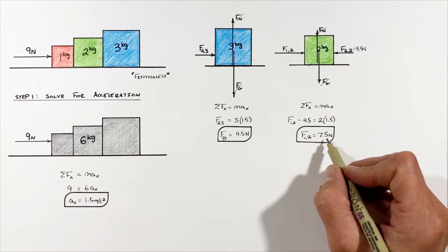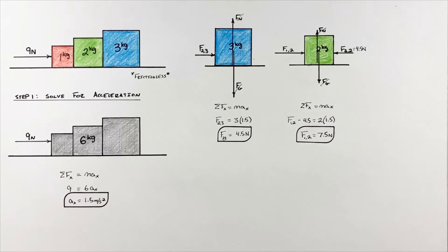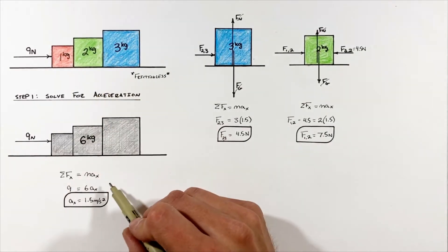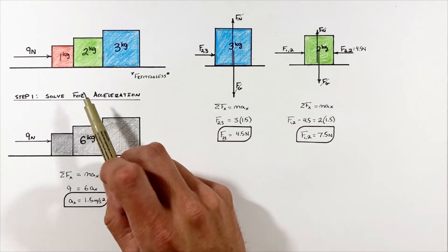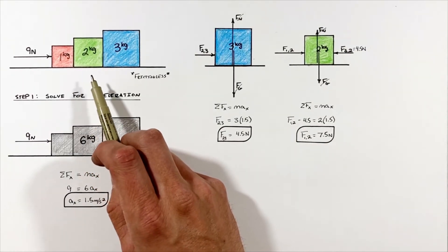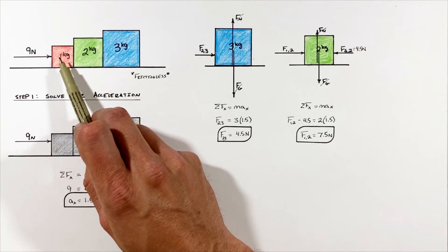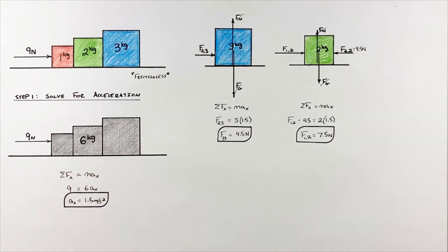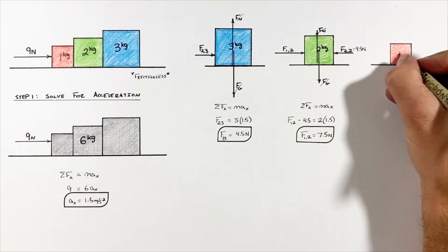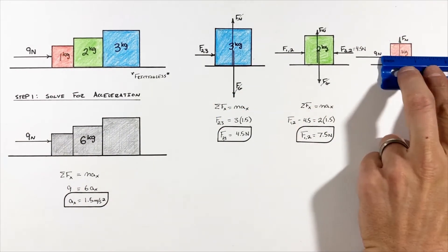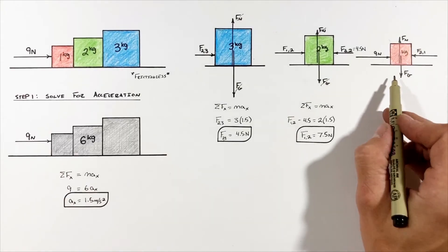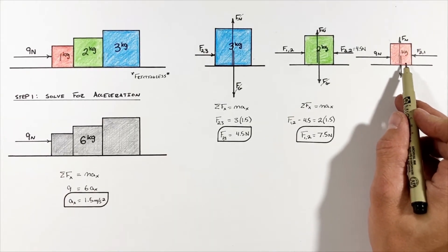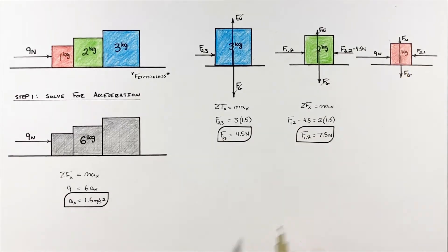We've now solved for the acceleration and the normal forces between the blocks. I'm going to show a trick to double-check everything is correct by looking at the free body diagram of the one-kilogram block. When we apply Newton's second law to this block horizontally, we should find that it accelerates at 1.5 meters per second squared.